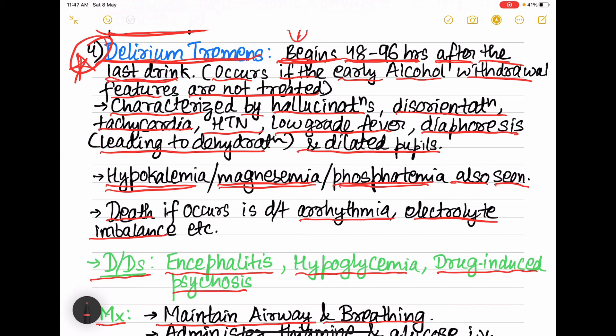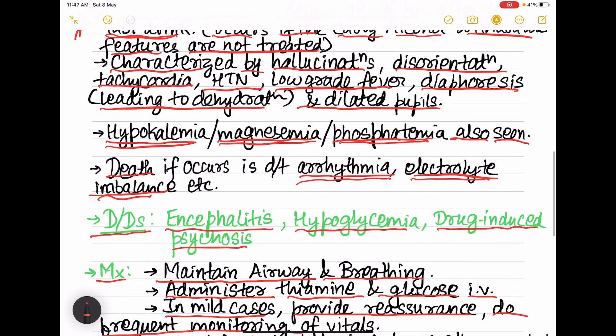And death if it occurs in case of delirium tremens, then it is due to arrhythmia or due to electrolyte imbalance and sometimes pneumonia. Then DDx: encephalitis, hypoglycemia, drug-induced psychosis, etc.